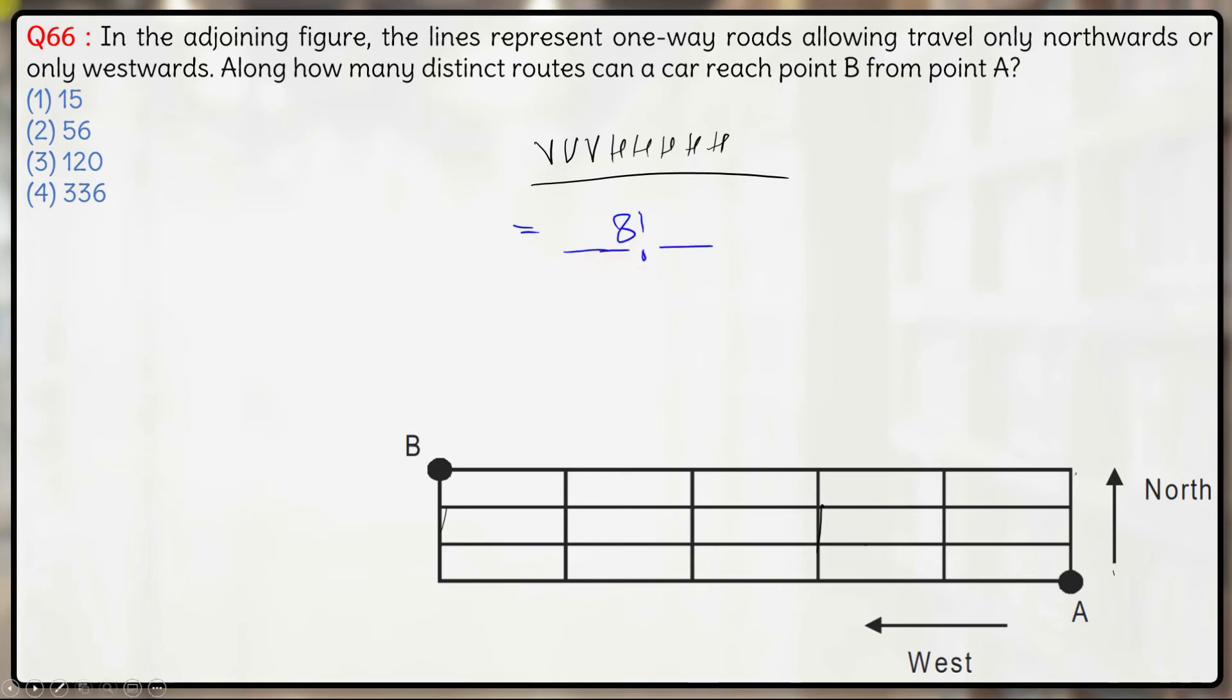But out of these eight objects, these three are alike, so you divide them by three factorial and these five are alike, you divide them by five factorial here.